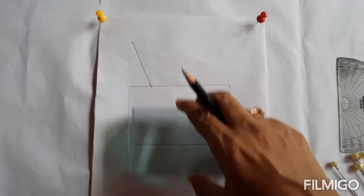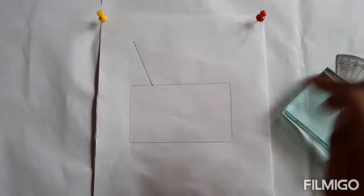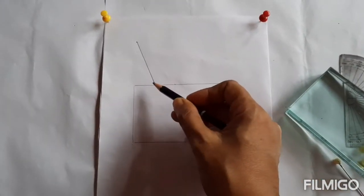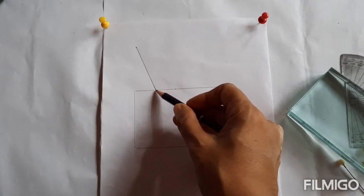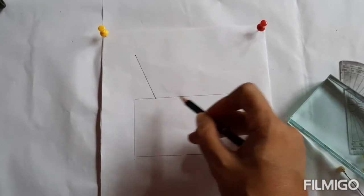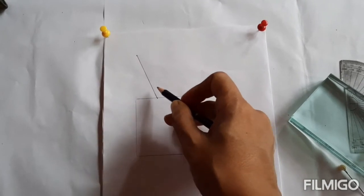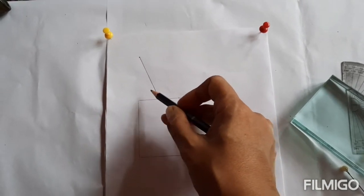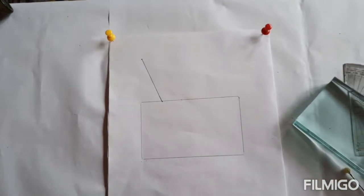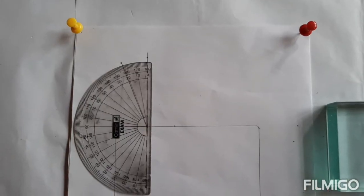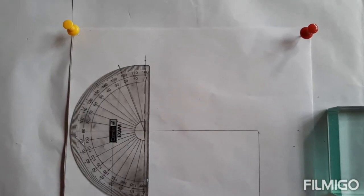When we remove the glass block, at the point where the incident ray is touching the surface of the glass block, we are going to draw 90 degrees to find out the angle of incidence. The angle of incidence we get is 22 degrees.